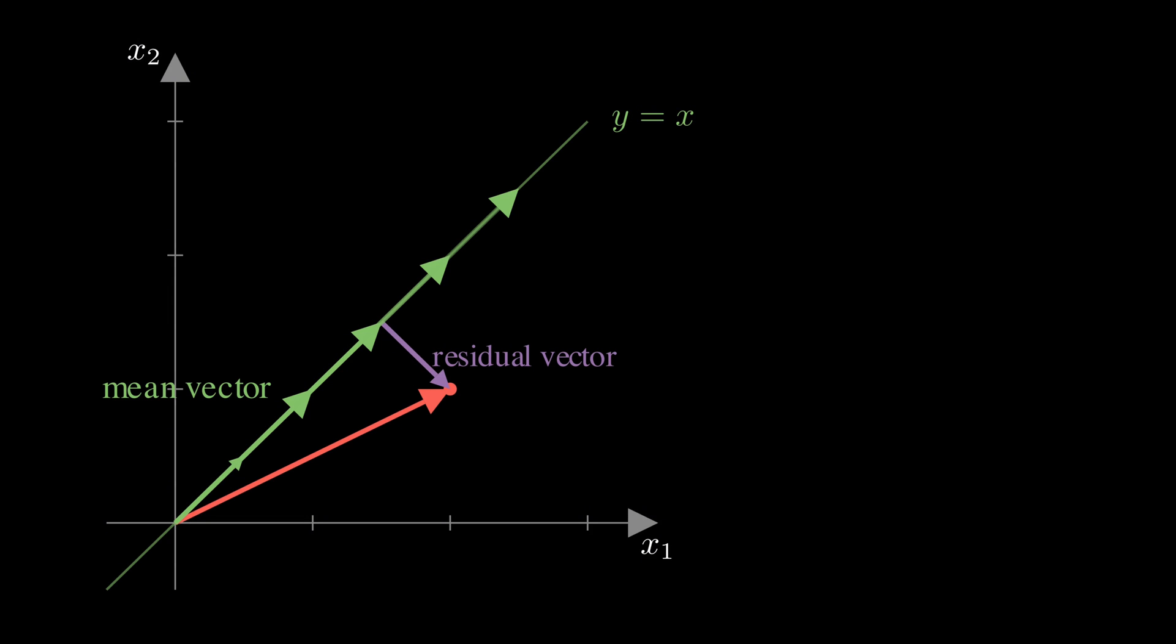No matter what data you collect, the mean vector has to land somewhere on this line, which is just one dimensional, so we say the mean vector has only one degree of freedom.